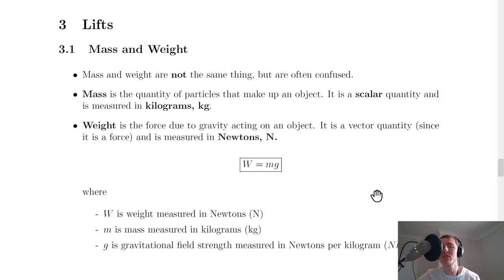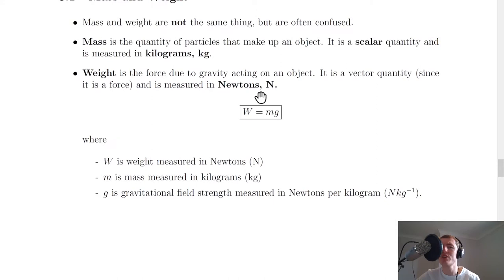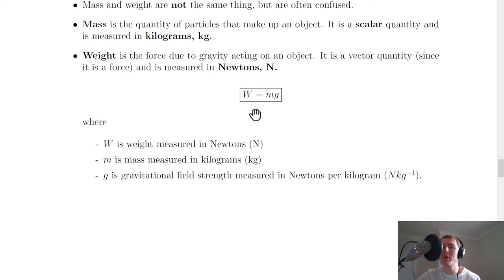This is a reminder from National 5 Physics: mass and weight are not the same thing, but are often confused in everyday life. Mass is the quantity of particles that make up an object — it is a scalar quantity, measured in kilograms. For mass we do not care about direction, just magnitude; it describes how much matter makes up an object. Weight, on the other hand, is the force due to gravity acting on an object — it is a vector quantity, measured in newtons, so direction matters.